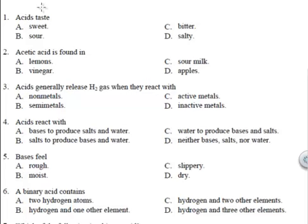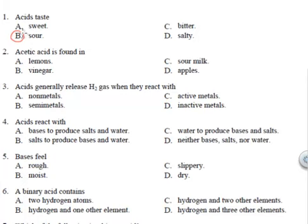We're going to go over the acids and bases portion of the final exam — this is for review. Acids should taste sour. Acetic acid is found in vinegar; acetic acid comes from acetate, which is a polyatomic ion. Acids generally release H2 gas when they react with active metals. Remember, your acids will typically contain hydrogen.